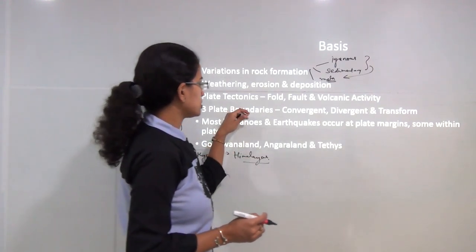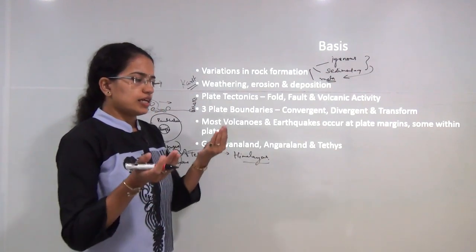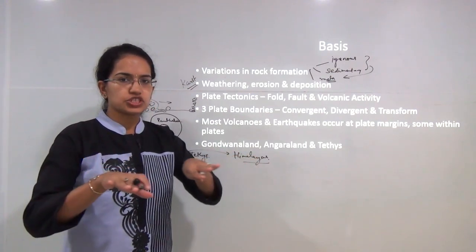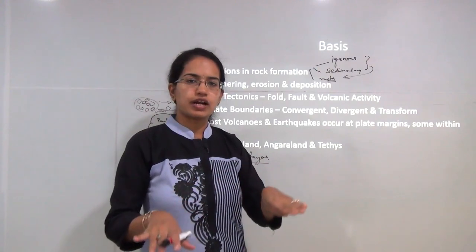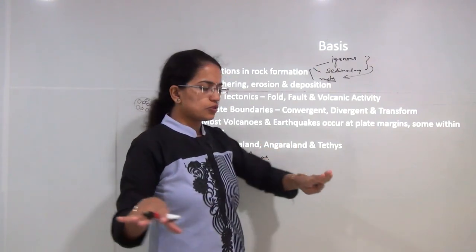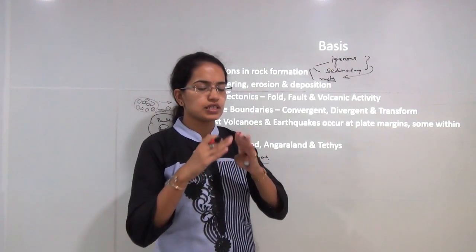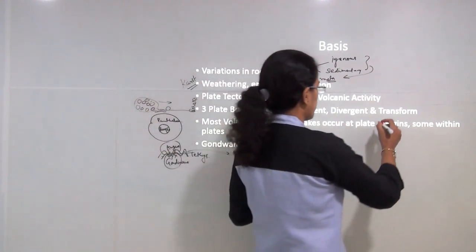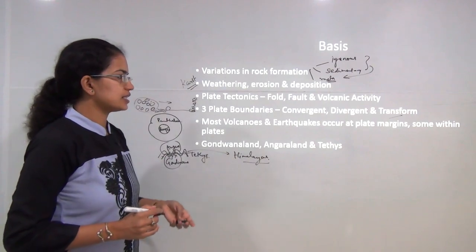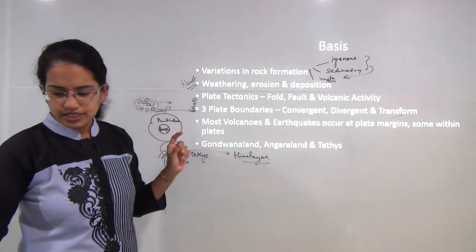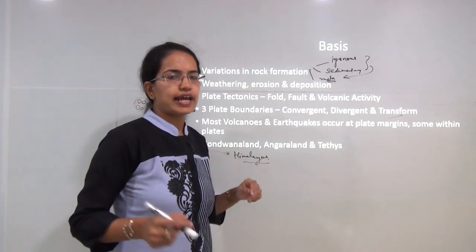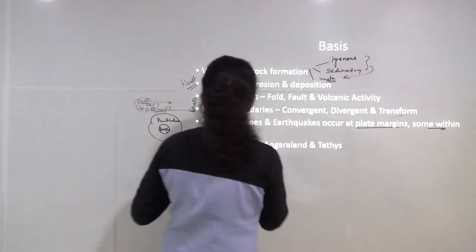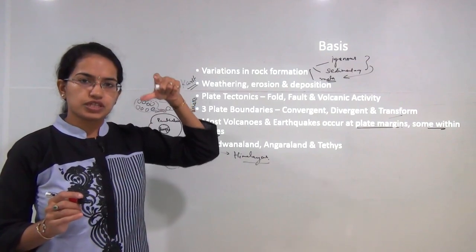Another theory focused on plate tectonics, explaining that there are plates with certain movements. There are three basic plate boundary movements: when two plates come close together we call them convergent boundaries; when they go far away we call those divergent boundaries; and when they slip past one another we call those transform boundaries. Most volcanic and earthquake activities take place along the plate margins, however in certain cases these activities are seen within the plates.